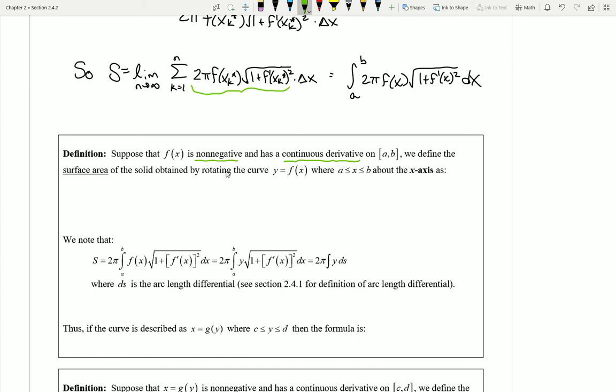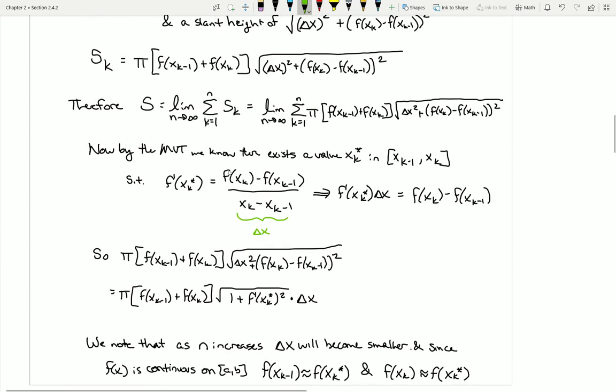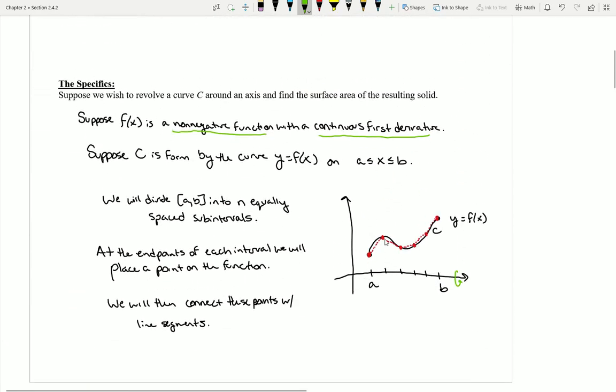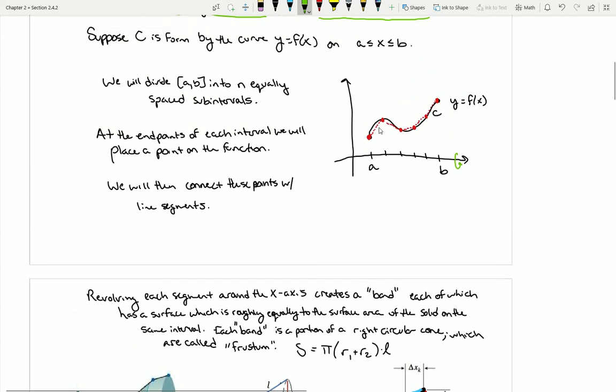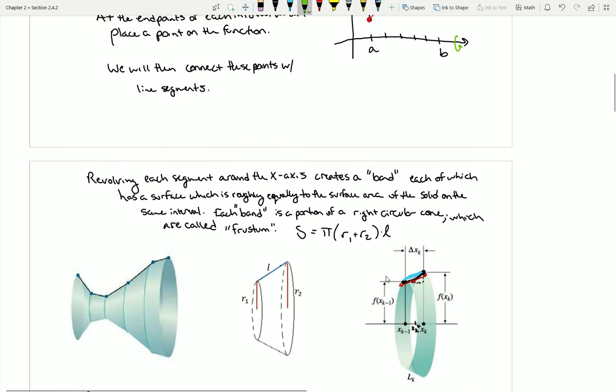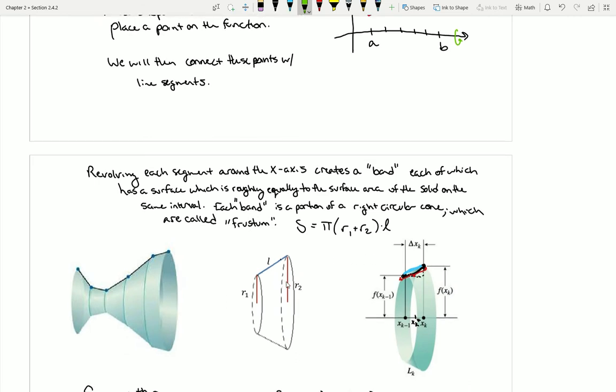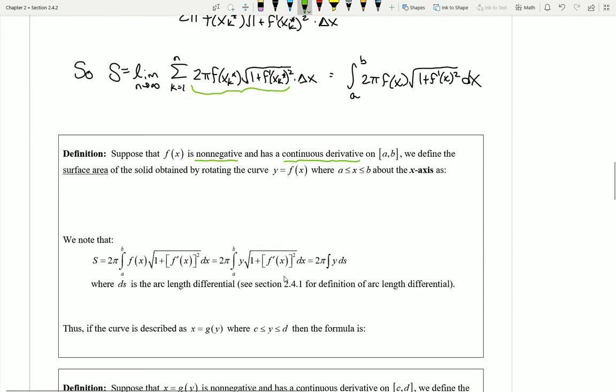The thing we didn't quite look at was the fact that we needed a non-negative function. That would mean my function would have to exist above the x-axis, so that my f(x_k-1) and my f(x_k) could actually represent the lengths of these radii. It's extremely important that we have a non-negative function so that our f(x_k*) can ultimately end up representing the length of those radii.